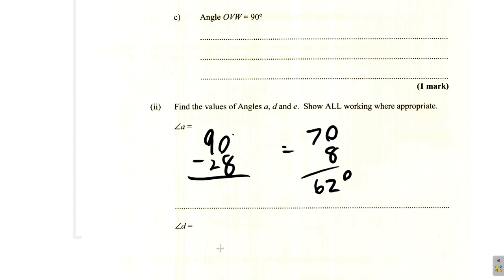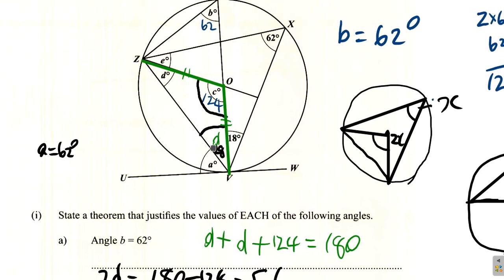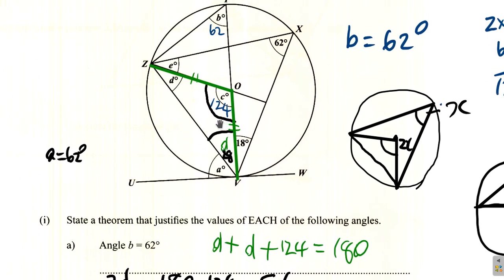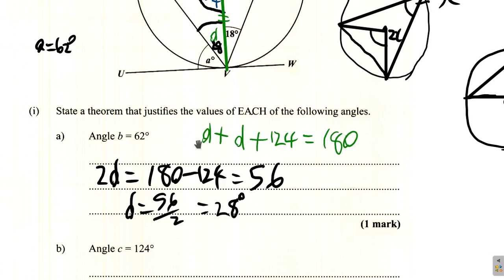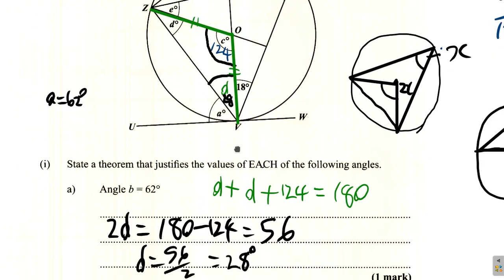For angle D, make sure you write down all the working clearly. Since triangle VOZ is isosceles, angle OZV equals angle OVZ equals D. Then D plus D plus 124 equals 180, giving 2D equals 56, so D equals 28 degrees.